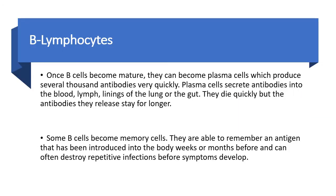B cells can also become plasma cells, which produce several thousands of antibodies very quickly. Plasma cells secrete antibodies into the blood, the lymph, and the gut as well, but they die very quickly. The antibodies that they produce, however, will stay for longer.